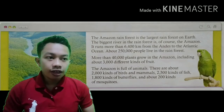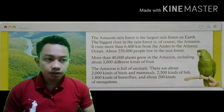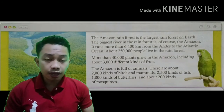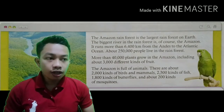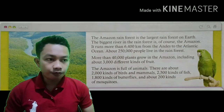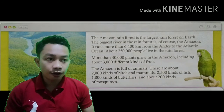The Amazon is full of animals. There are about 2,000 kinds of birds and mammals, 2,500 kinds of fish, 1,800 kinds of butterflies, and about 200 kinds of mosquitoes.